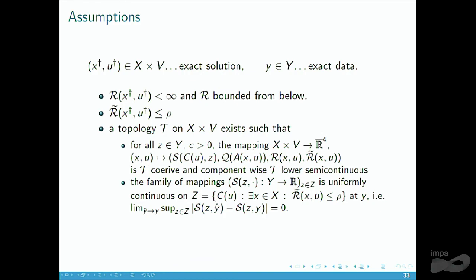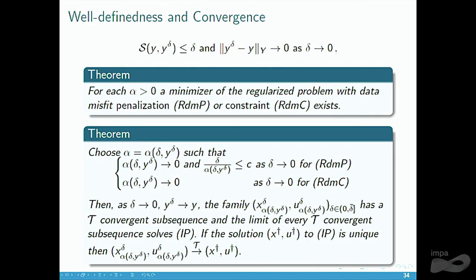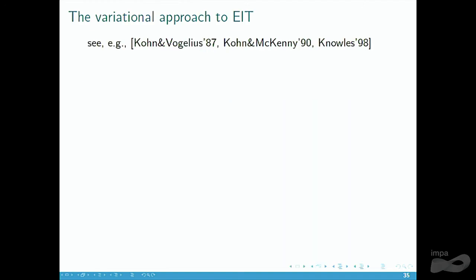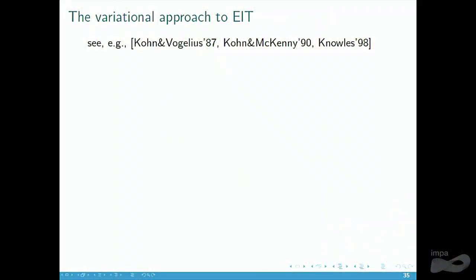Just briefly about convergence analysis, to show that it exists: under the typical assumptions, one can prove existence of minimizers and convergence as the noise level goes to zero with an appropriate choice of regularization parameter, in a topology that fits the regularization terms. Beyond the all-at-once approach with A and C, minimization-based formulations also capture things previously devised, allowing regularization to be added to those.